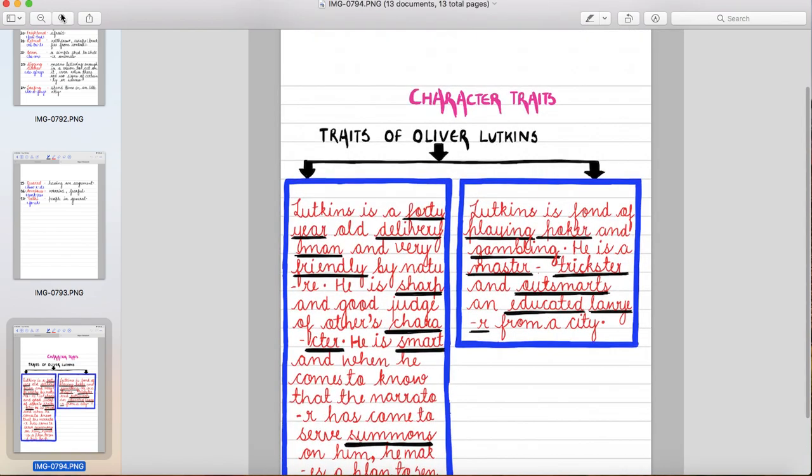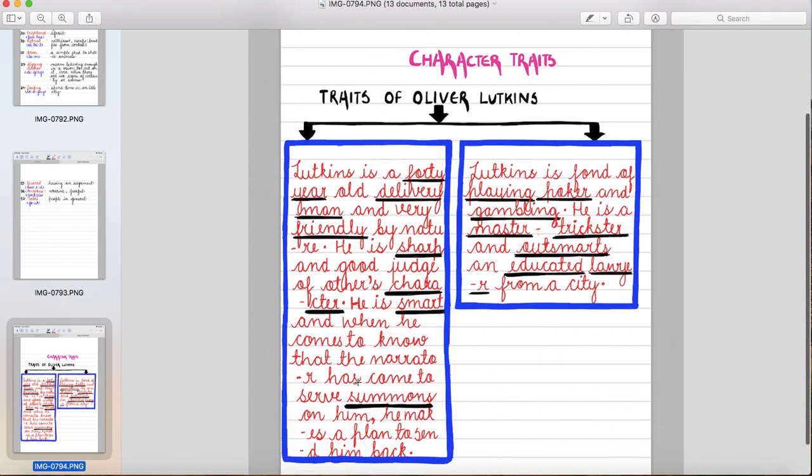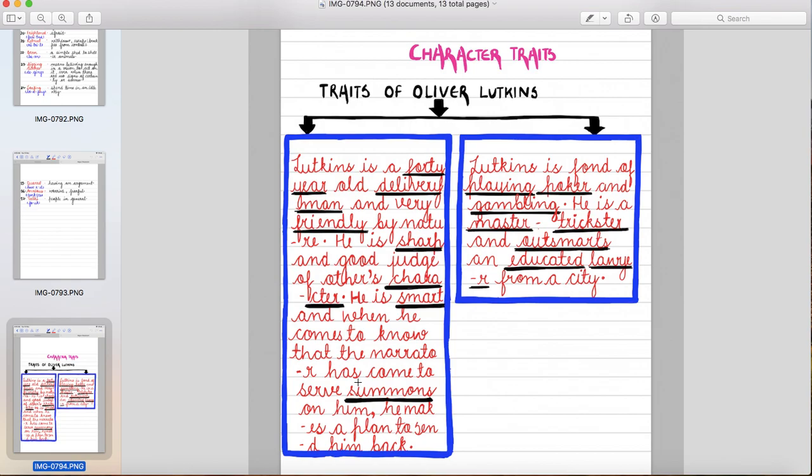Now let's discuss the traits of Oliver Lutkins. Lutkins is a forty-year-old delivery man and very friendly by nature. He is sharp and good judge of others character. Woh logon ki character ko bohut jaldi se judge kar leta hai. He is smart and when he comes to know that the narrator has come to serve summons on him, he makes a plan to send him back.